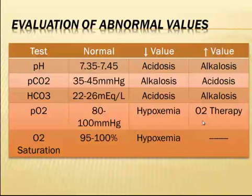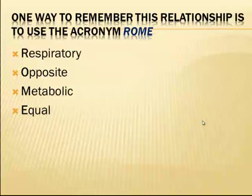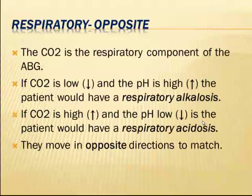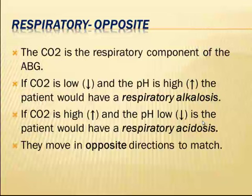If oxygen saturation is less than 95%, the patient is experiencing hypoxemia. There is one easy way to remember these relationships — the acronym ROME. R stands for respiratory problem, O for opposite direction, M for metabolic problem or disturbance, and E for when the pH and bicarbonate move in the same or equal direction.